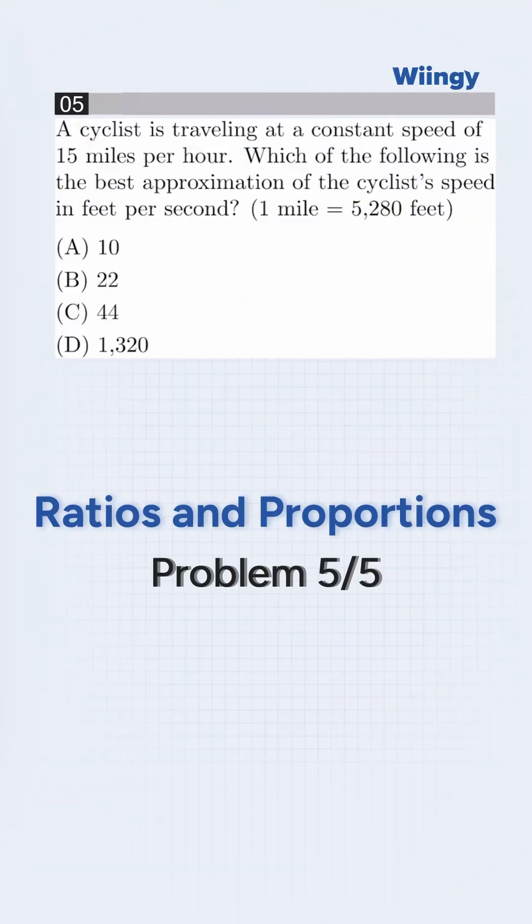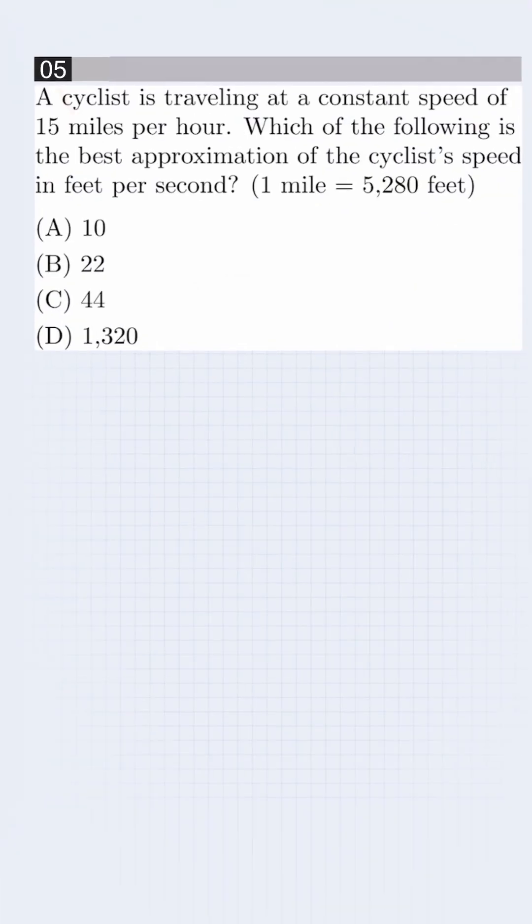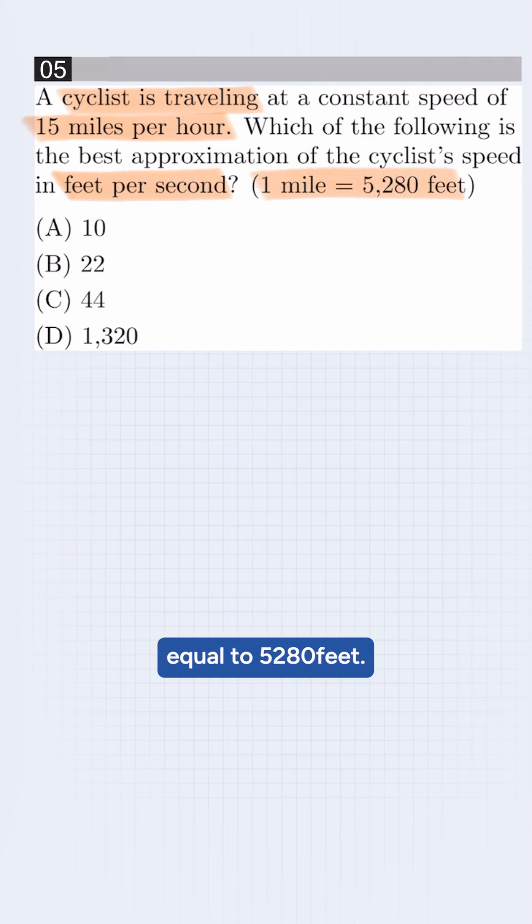Let's test your skills with a quick SAT math challenge. The question says a cyclist is traveling at the constant speed of 15 miles per hour. Which of the following is the best approximation of the cyclist's speed in feet per second? We are given one mile is equal to 5,280 feet.